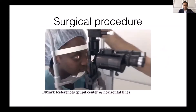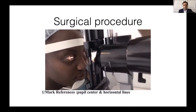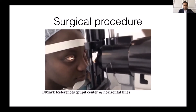I want to show you my surgical procedure. I always start with the mark reference of the pupil and the center and the horizontal lines. I use the slit lamp so the patient looks in the center. I have the pupil in front of me and I ask my patient to hide the opposite eye so they will really be on the visual axis.